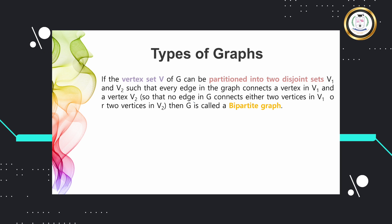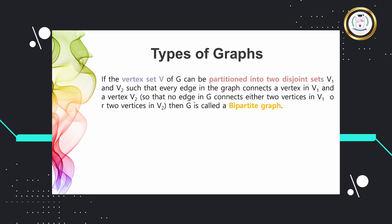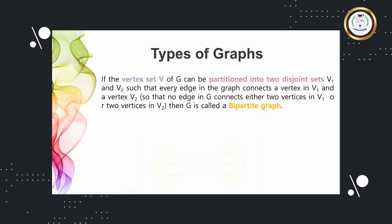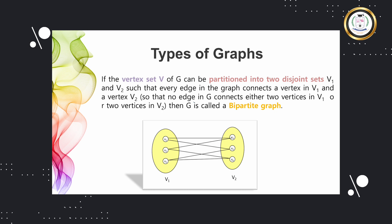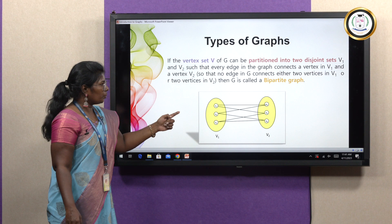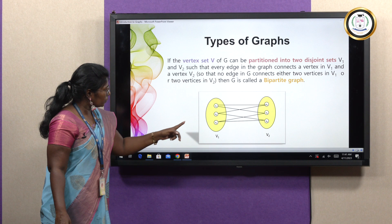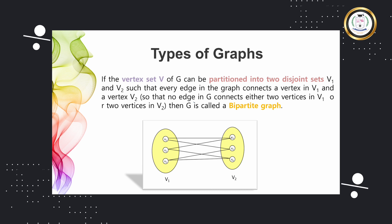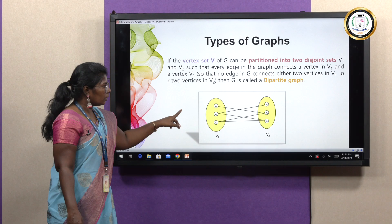A bipartite graph — as the name denotes — partitions the vertex set V into two different sets, V1 and V2, which are subsets of V, such that every edge in the graph connects a vertex from one set to a vertex in the other set, not within the same set. For example, V1 contains three vertices and V2 contains three vertices V4, V5, V6, making six vertices total in graph G. The vertices in V1 are not connected with themselves, and there is no adjacency between vertices within V1 or V2 itself.